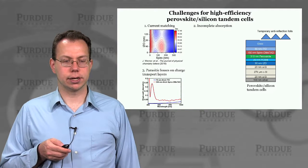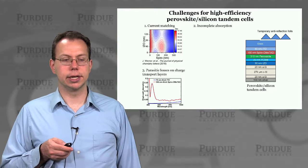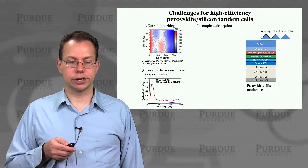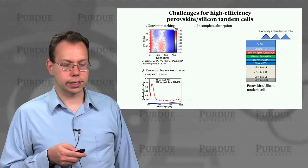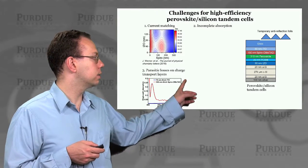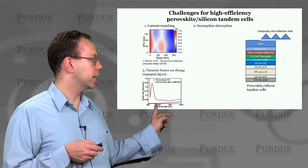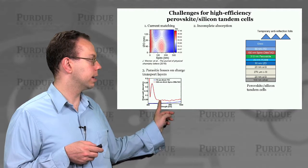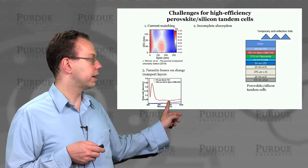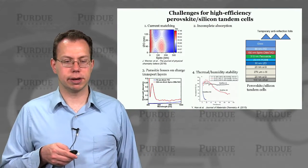There are also issues about parasitic losses in the charge transport layers, which may be optical in nature as well. This illustrates how significant the parasitic absorption can be — especially at shorter wavelengths, it's a big problem up to about 500–550 nanometers, and even past that there's still a significant amount.